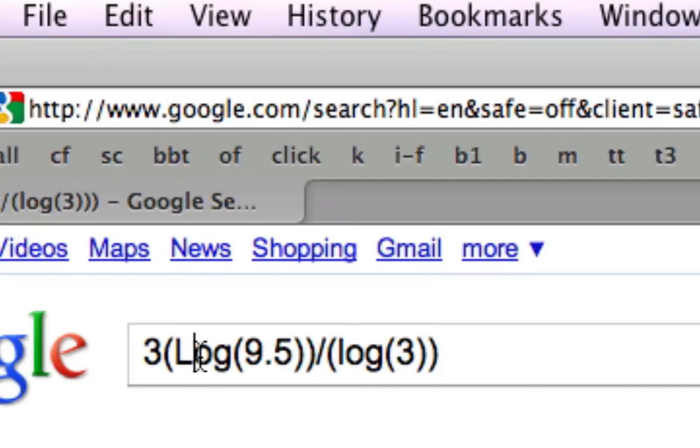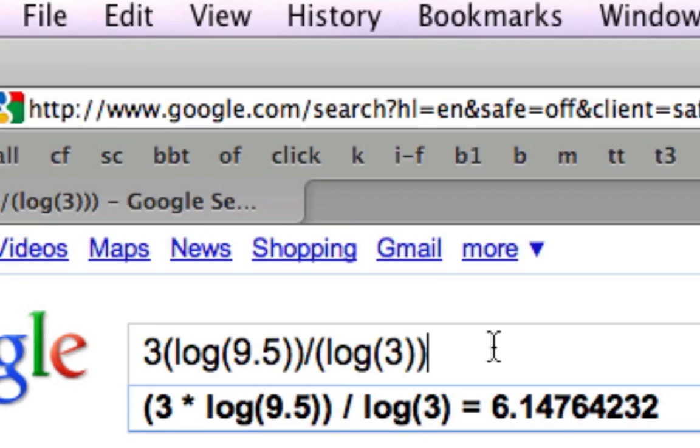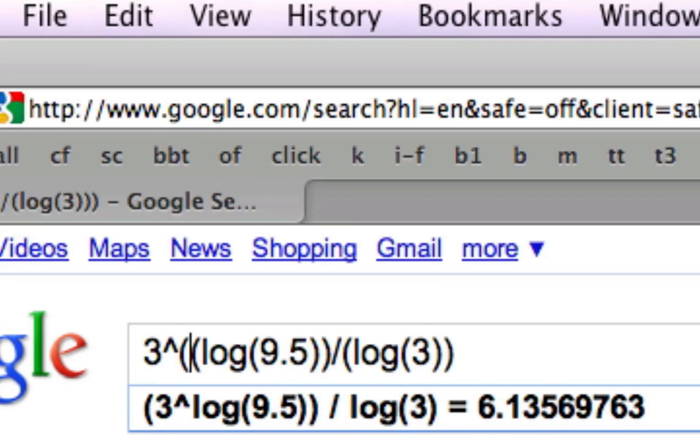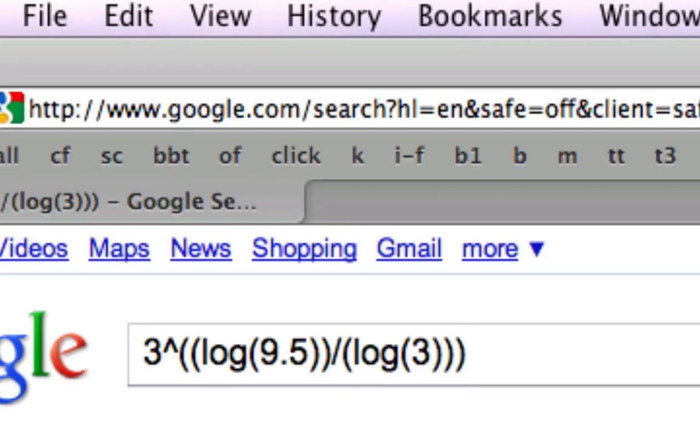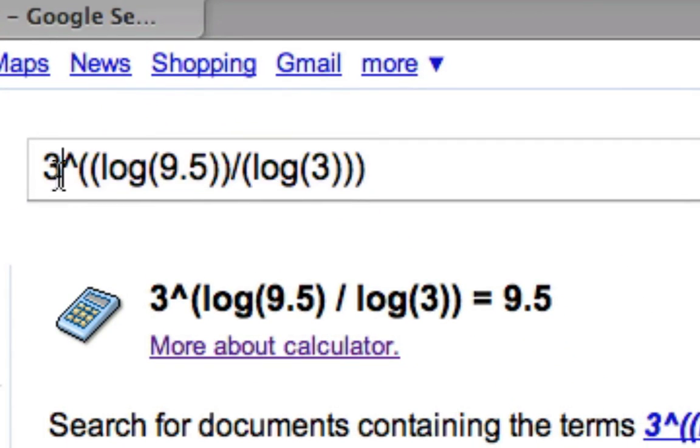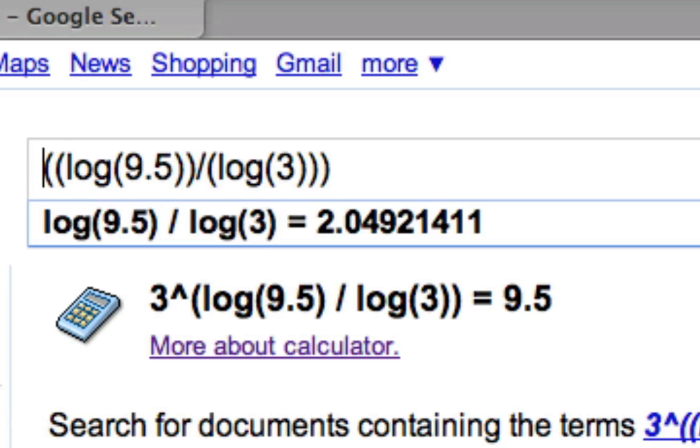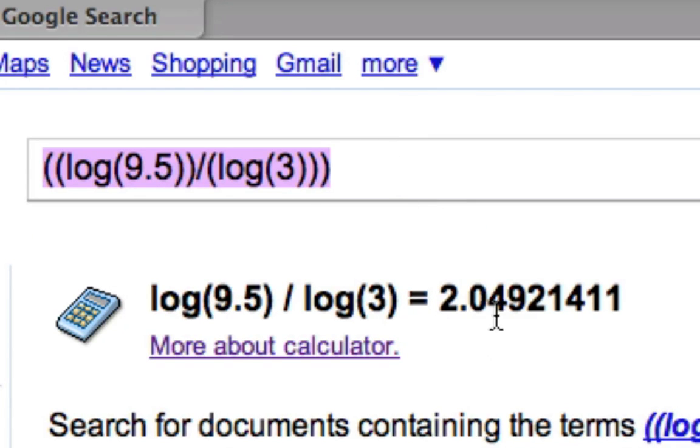But if we enter it, and you've got to change your capital logs to lowercase logs. That's just how their calculator works. Raise it to this power. Include your parentheses. Three to that does equal 9.5. And that equals 2.04. It goes on for a while, so they round it off. So that's cool.